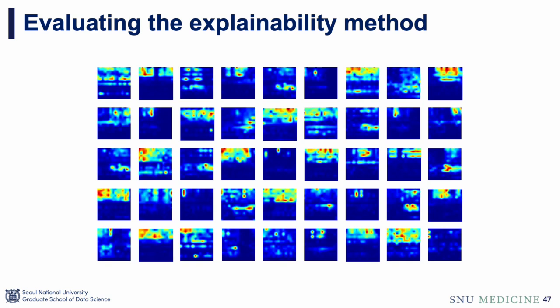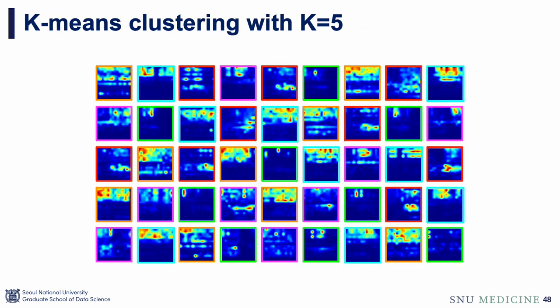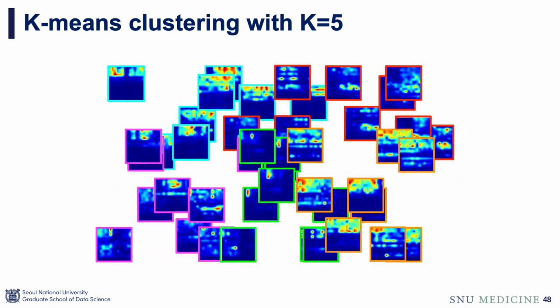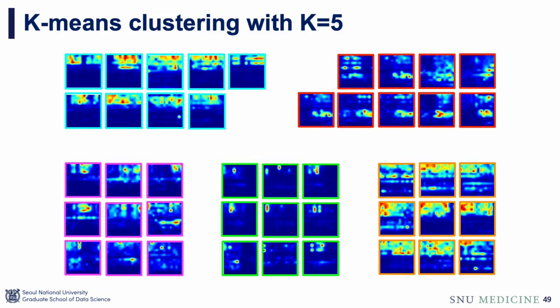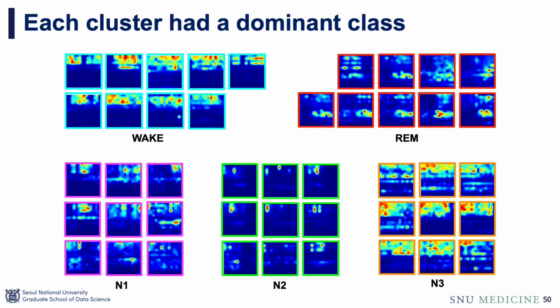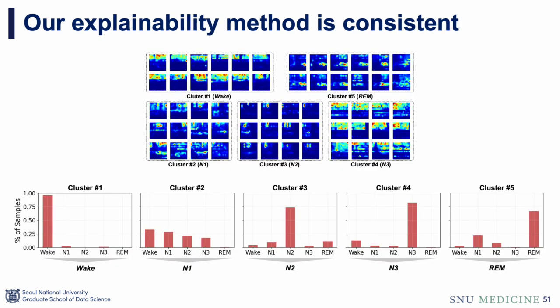We also evaluated our explainability method's consistency using k-means clustering. Without using labels, we grouped images into five clusters and found that similar heatmaps grouped together, with each cluster having a dominant class. This finding suggests that our explainability method is consistent. Excluding N1, we observed that the same class consistently generates similar heatmaps.